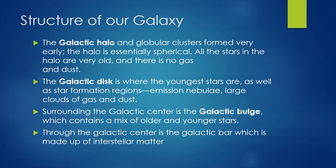Much of the knowledge of the structure of the galactic disk comes through radio emission. The galactic halo and the globular clusters formed very early — the halo is essentially spherical, all the stars in the halo are very old, and there is no gas and dust. In the galactic disk we have much younger stars and a lot of star formation regions, which we can tell because of emission nebulae and large clouds of gas and dust. Everything in the galactic disk rotates on a plane and in the same direction — the closer to the center of the galaxy, the faster you spin, just like in our solar system.